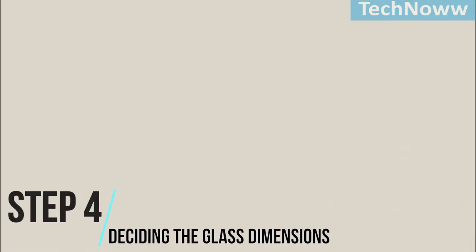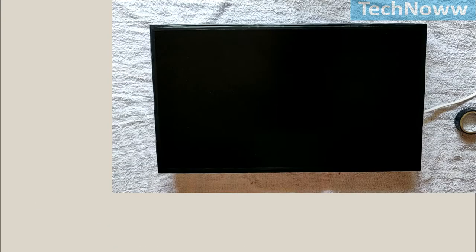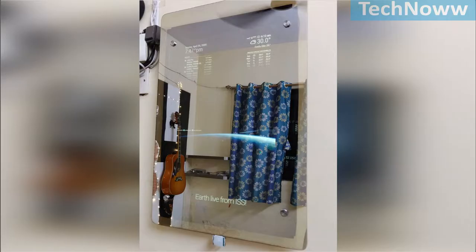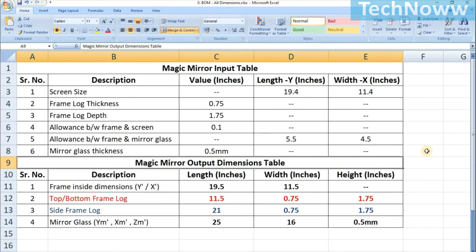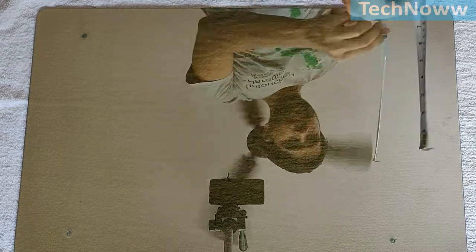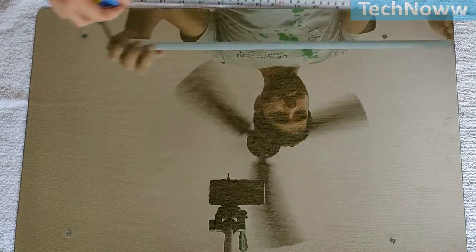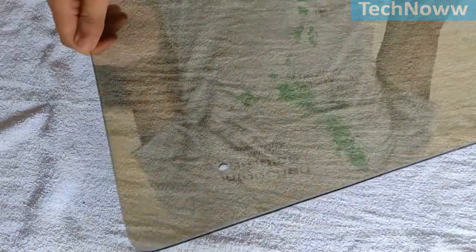Step 4: Deciding the glass dimensions. So as of now, we have our frame and monitor screen ready. Next, we need to decide the dimensions of the mirror glass that we are going to use. There is no hard and fast rule to consider the size of mirror glass. However, my intent was that the frame should not be visible from the sides. Hence, I added 4.5 inches and 5.5 inches to X and Y dash dimensions respectively. So, the dimensions of the mirror glass comes out to be X m dash is equal to 16 inches and Y m dash is equal to 25 inches. The corners must be blunt to avoid any sharp edges.